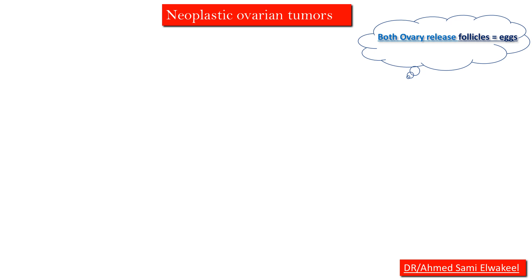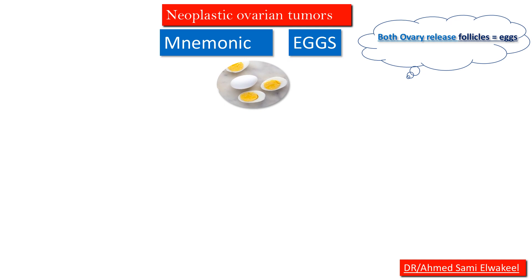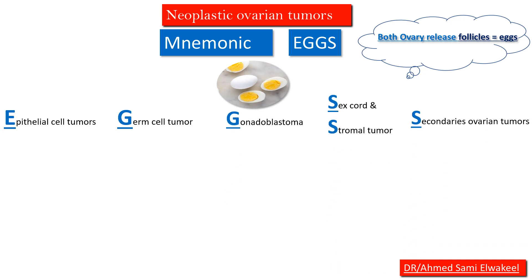We know that both ovaries release follicles, and follicles equal eggs, so the mnemonic is EGGS. E for epithelial cell tumors, G for germ cell tumors, a second G for gonadoblastoma, S for sex cord stromal tumors, and S for secondary ovarian tumors. The mnemonic for epithelial cell tumors is CEMBC.